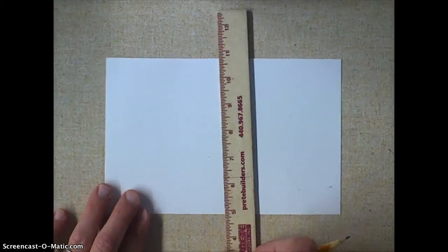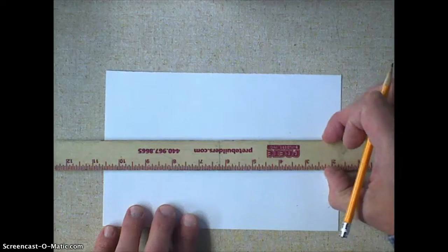So the first thing we're going to do is make three lines anywhere vertically, and vertical is up and down. So straight up and down is vertical, long ways is horizontal.